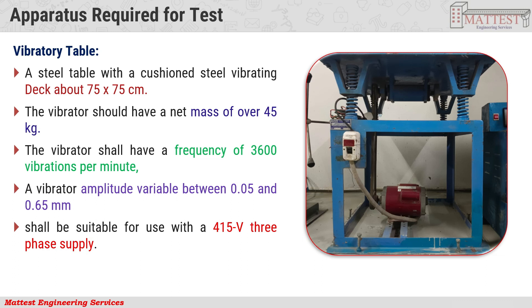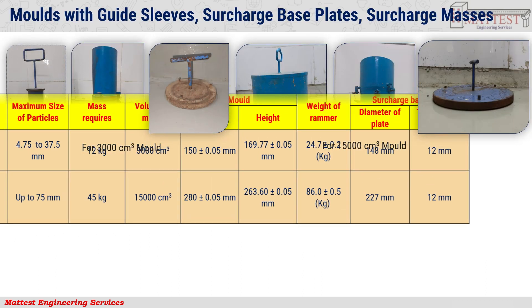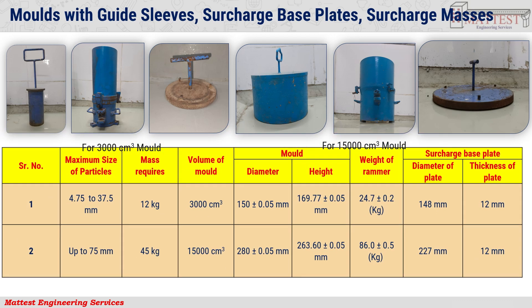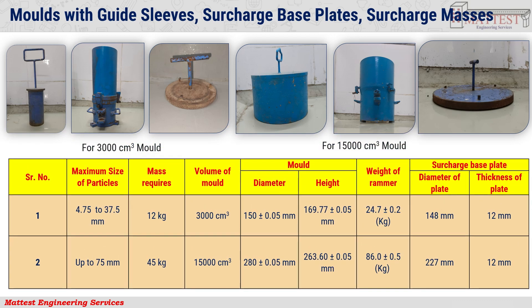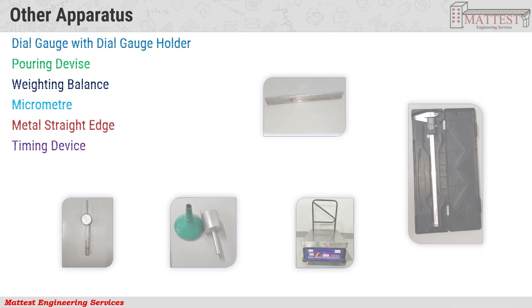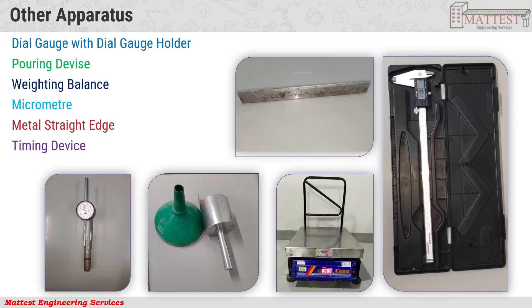Power supply: three-phase system. Other apparatus required are: mold with guide sleeve, surcharge base plates, and surcharge mass. Select the size of mold based on the maximum size of particle present in the soil sample. Additional apparatus include: dial gauge with dial gauge holder, pouring device, weighing balance, a micrometer, metal straight edge, and other trimming devices.